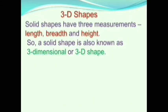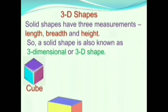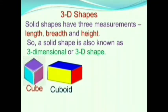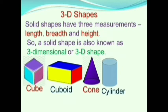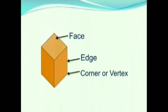Till now, we learnt about plane figures which can be drawn on a plane surface or a paper. Now we will learn about 3D shapes. Solid shapes have three measurements — length, breadth and height — so a solid shape is also known as a three-dimensional or 3D shape. In this class we will learn about Cube, Cuboid, Cone, Cylinder, and Sphere. A 3D shape has three main parts: face, edge, and corner or vertex.